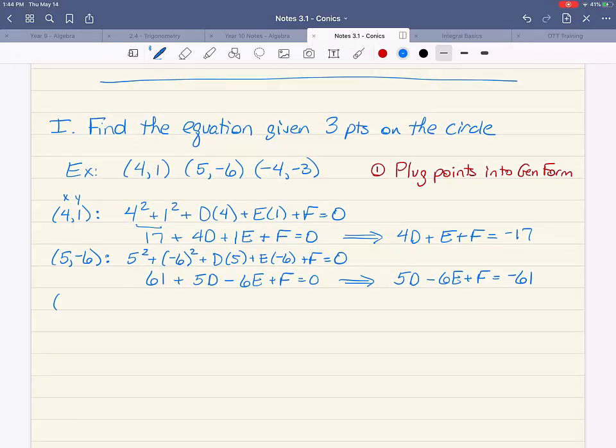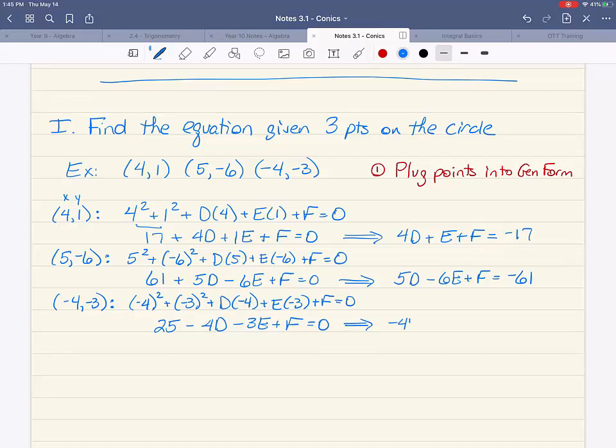Now finally, do the same thing with the last point, negative four comma negative three. Remember your brackets and the squares go on the outside. Negative four squared plus negative three squared plus d times negative four plus e times negative three plus f equals zero. Negative four squared plus negative three squared is twenty-five. Minus four d minus three e plus f equals zero. So rearranging this one is negative four d minus three e plus f equals negative twenty-five.